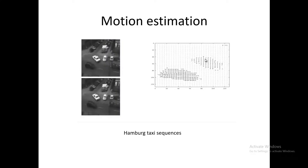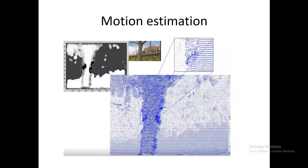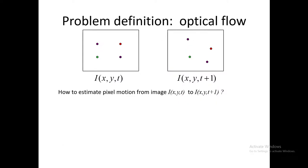Here are some other examples: the Embok taxi sequence showing motion vectors; a video of a player playing table tennis or ping pong with motion vectors shown; and another example where the movement of a tree is tracked. Now let's look at a simple definition of the problem.